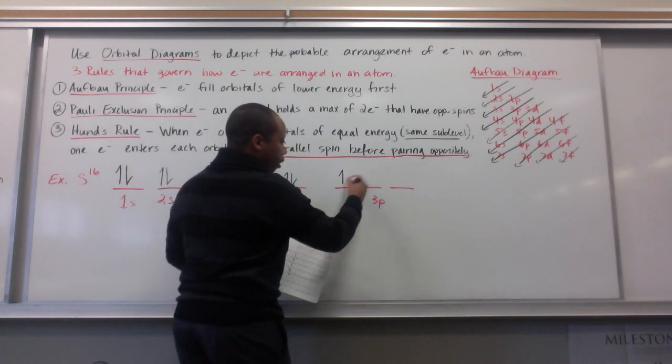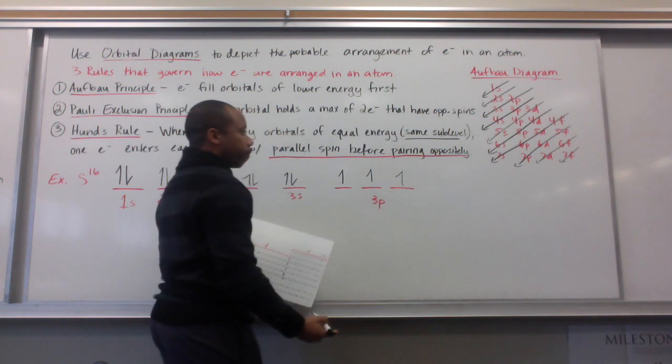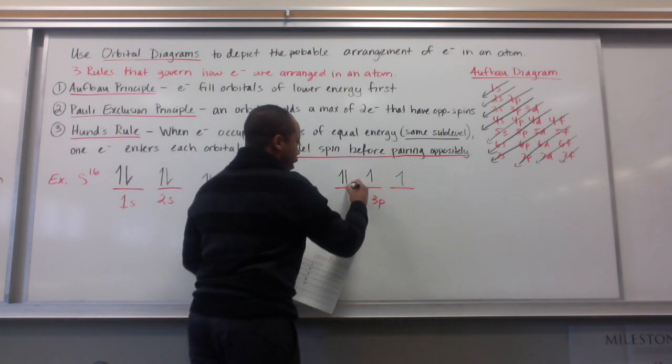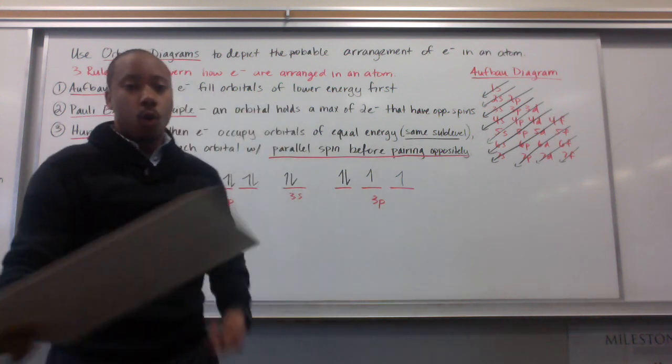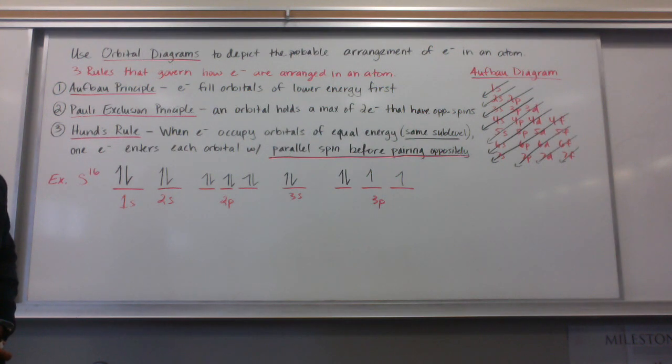Which says, since I have four electrons in place, I put three with parallel spin before I go and pair oppositely. That is the orbital diagram of sulfur. Let's take notes on that one.